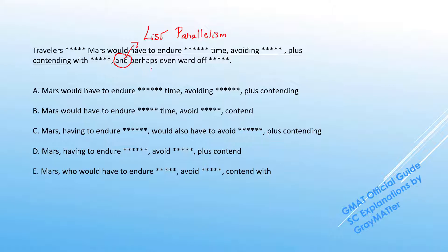We can see this is a list of actions because the list ends with 'perhaps even ward off'. Ward off is a verb, an action. So whatever is in the list must be parallel to 'ward'.